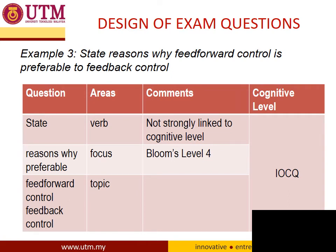In example three, 'State reasons why feed forward control is preferable to feedback control,' the word 'preferable' changes the level to Bloom's level 4 — analysis — making it an intermediate order cognitive question. The focus is 'reasons why preferable,' and there are two topics: feed forward control and feedback control. Students need to answer accordingly.